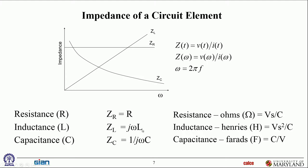Looking at the units: resistance is simply the ratio of voltage to current. Inductance has an extra factor of seconds because it relates to the derivative; capacitance is the inverse. In terms of frequency behavior: resistor impedance is a constant, independent of frequency. Inductor impedance grows linearly with frequency. Capacitor impedance drops inversely with frequency.